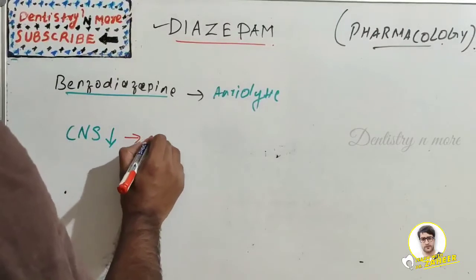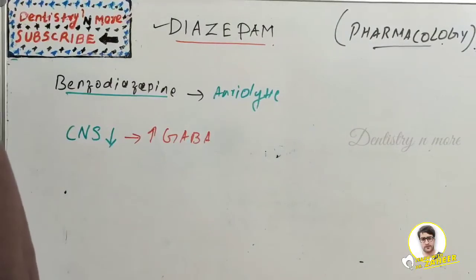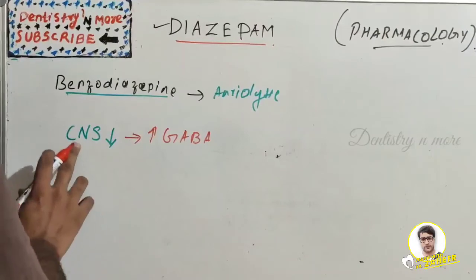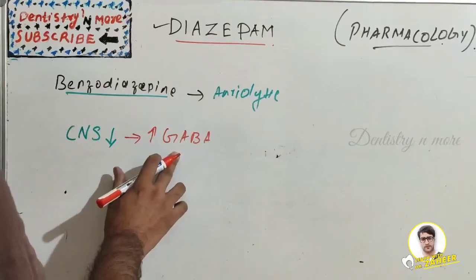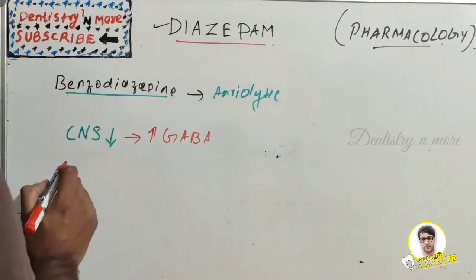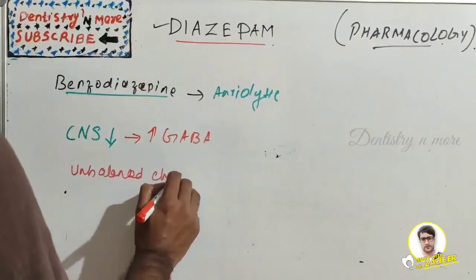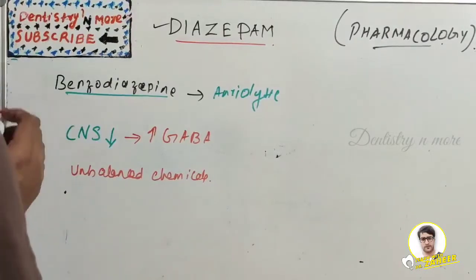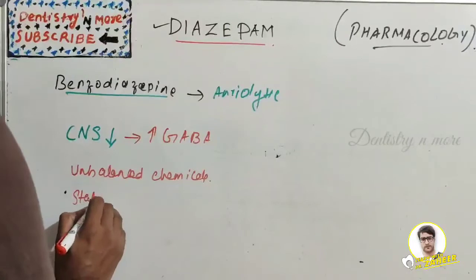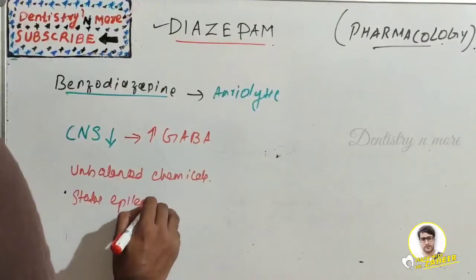GABA stands for gamma-aminobutyric acid. Diazepam depresses all levels of CNS activity by increasing the action of GABA, and it helps to treat unbalanced chemicals in the brain cells. It is also used to treat status epilepticus and other convulsive disorders.